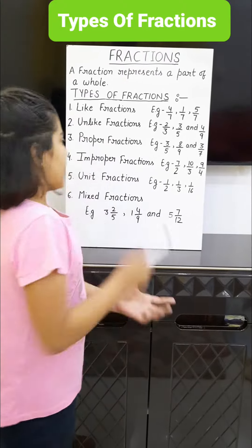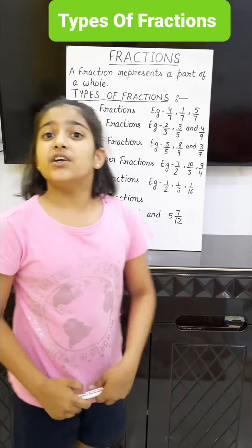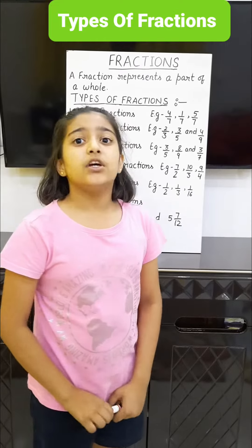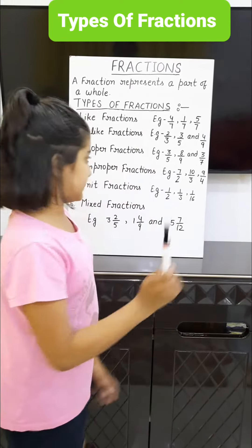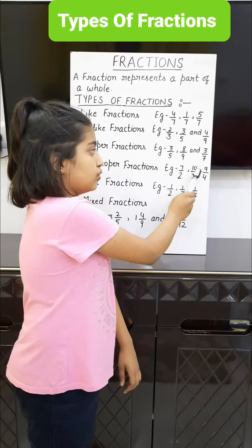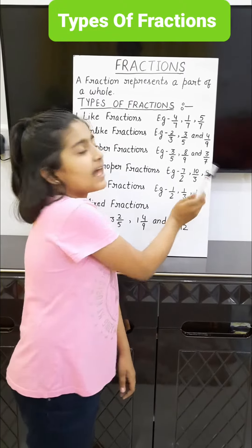Fourth, improper fractions: fractions in which the numerator is greater than the denominator. Example: 7/2, 10/3, and 9/4.